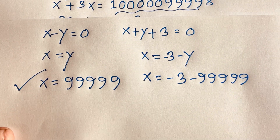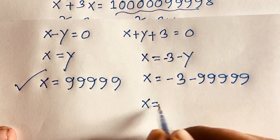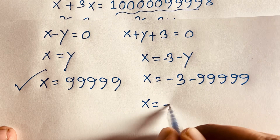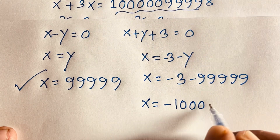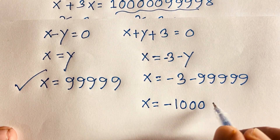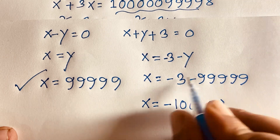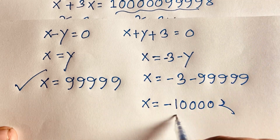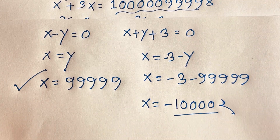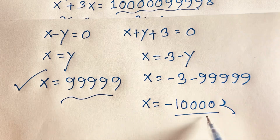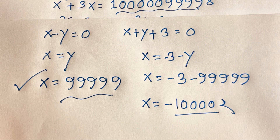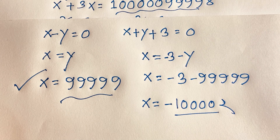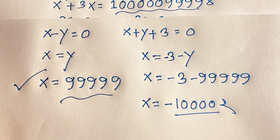Then I can see easily x is equal to negative 100,002. So we find out x equals 99,999 and x equals negative 100,002. This is our final answer. Thank you all. If you enjoyed this video, please subscribe to my channel for other interesting videos. Goodbye, take care.